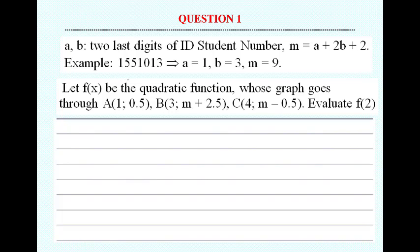First, we use two digits of your ID — the last digit — and m equals that one. So pay attention: if you have this number, you must derive it well. This is a, this is b, and you have your m. If you compute your m wrongly, automatically you have zero score. No discussion.